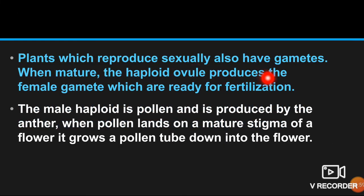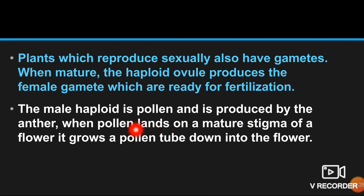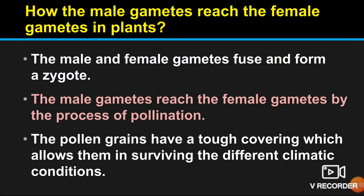Plants which reproduce sexually also have gametes. When mature, the haploid ovule produces the female gametes which are ready for fertilization. Pollen grains produce male gametes, and ovules produce female gametes. The male haploid is pollen, produced by the anther. When pollen lands on a mature stigma, it grows a pollen tube down into the flower toward the ovules. When pollen and ovules mix together, that is known as fertilization.